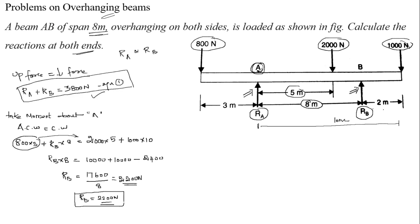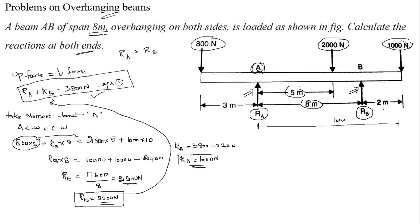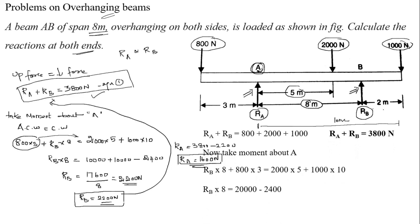Now we know equation 1: RA plus RB equals 3800. Substituting RB equals 2200, we get RA equals 3800 minus 2200, which equals 1600 Newton. So RA equals 1600 Newton and RB equals 2200 Newton. This is how we calculate RA and RB for overhanging beams.